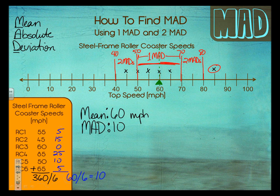There's one last thing to discuss — this point right here. That point is right on the end of one MAD. 50 is the end of one MAD, and that point is right on 50. That is not considered to be within one MAD. Your points have to be all in — if they're right on the boundary, if they're on the fence, they're not in one MAD. It's all or nothing. So that point at 50 is technically considered within two MADs, not one. Be careful of points like that.